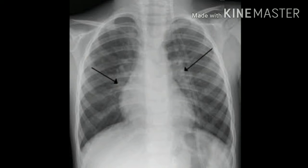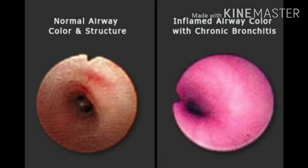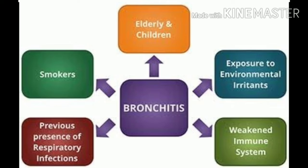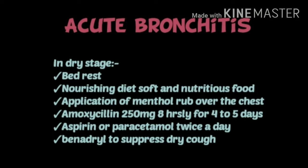X-ray view of bronchitis shows the lungs — comparing a normal bronchial tube and a chronic bronchial tube. Risk factors: elderly and children are more affected, smokers, exposure to environmental pollution and irritants such as fumes and dusts, previous presence of any respiratory infection like asthma or pneumonia, and persons with a weak immune system.